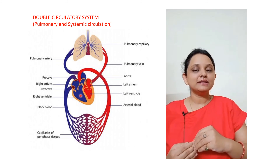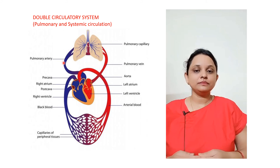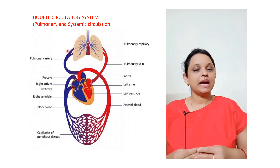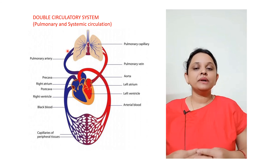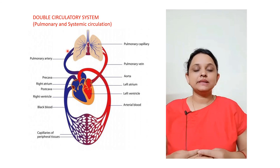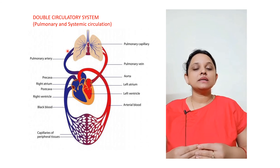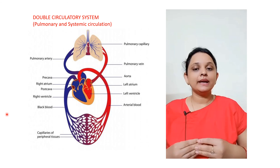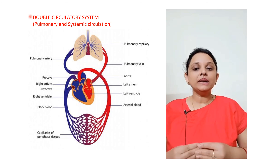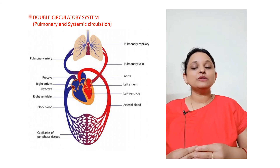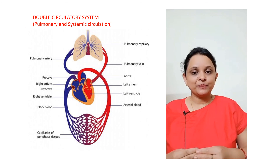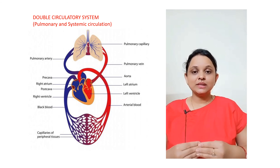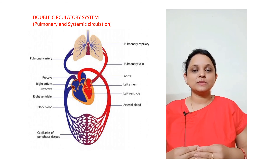Blood consists of plasma, red blood cells (RBC), white blood cells (WBC), and platelets. Plasma is the fluid in which RBCs, WBCs, and platelets are suspended. RBCs are the red blood cells which carry iron molecules, giving them their red color. White blood cells are the fighting molecules that provide immunity. Platelets are important for blood clotting. This concludes this short video on the circulatory system.